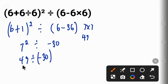Now, 49 divided by minus 30 can be written as 49 all over minus 30. Now, 49 can be divided by 30 once.